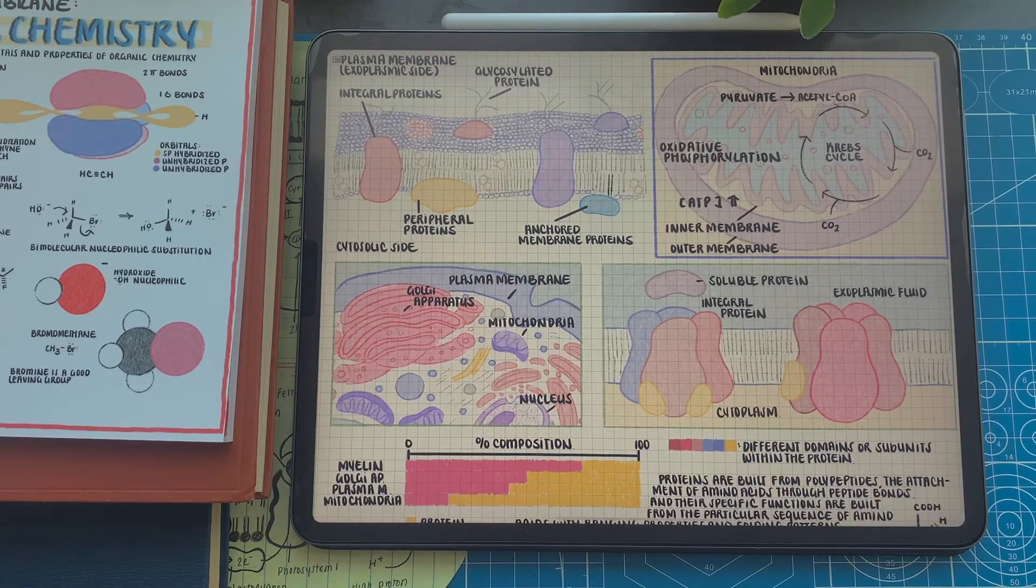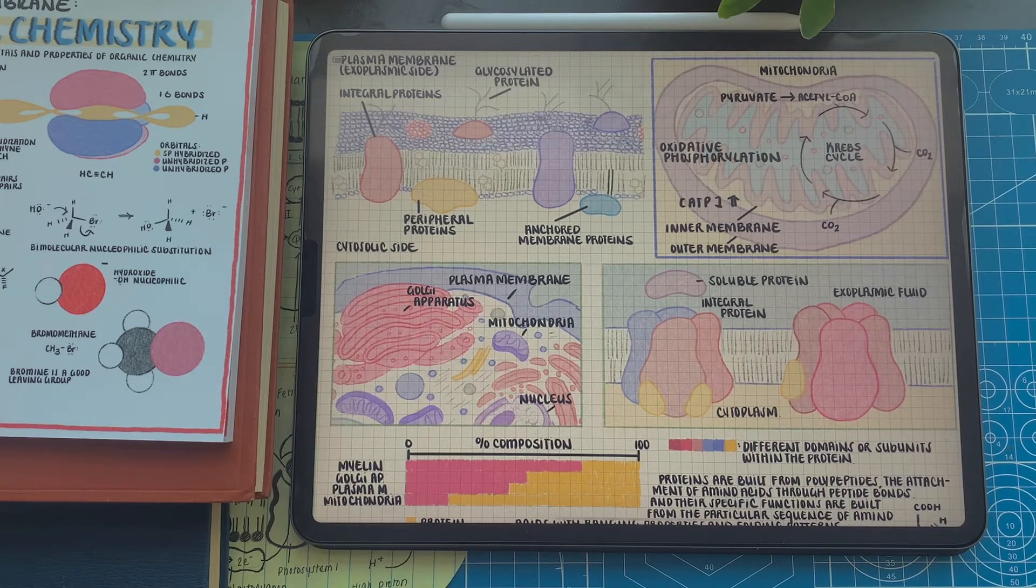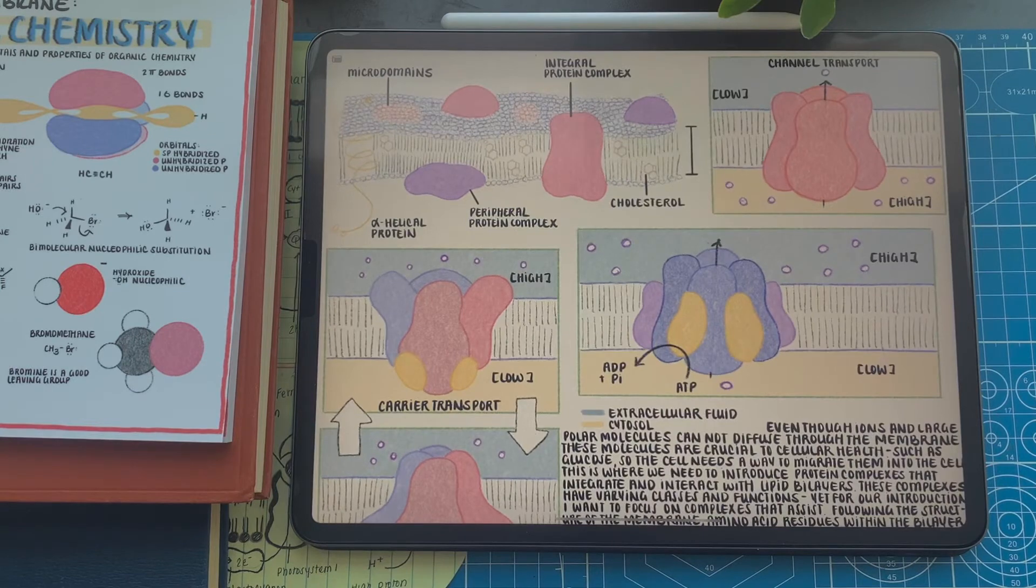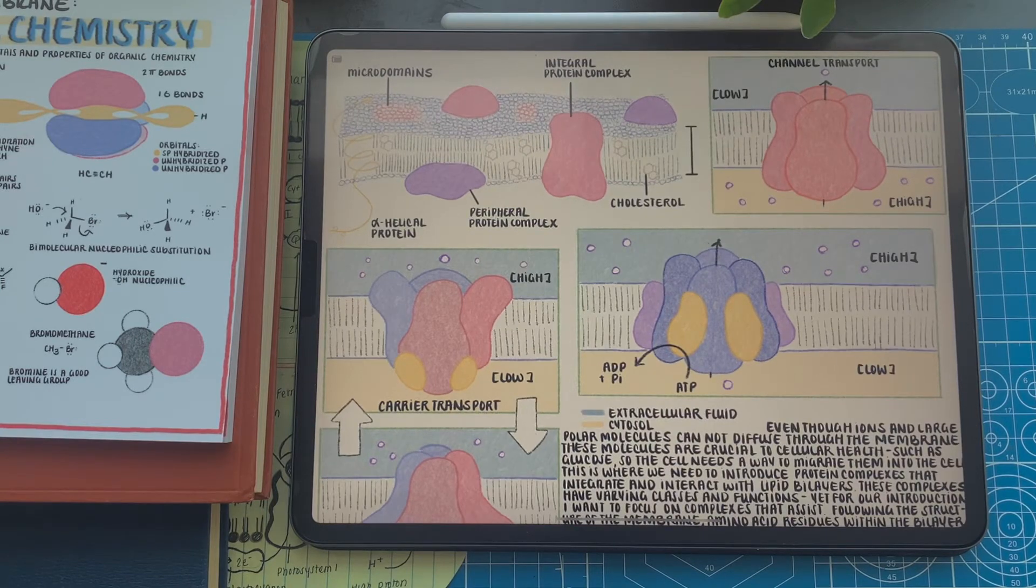Whereas the energy production organelles, such as the chloroplast and mitochondria, has a drastic increase because of their demand, having protein compositions around 75% on their surface.